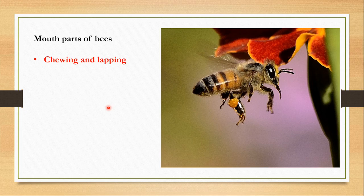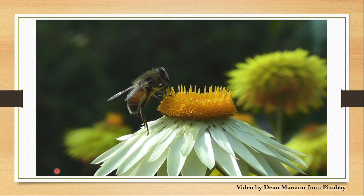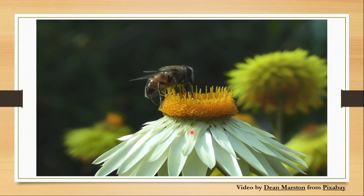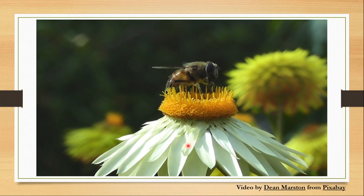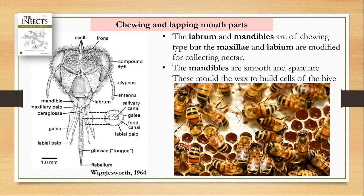Now I am going to talk about the chewing and lapping mouthparts found in bees. You can see the mouthparts getting inserted inside the flower to draw nectar from the bottom. The honeybees lap up the nectar from a flower. But honeybees also make nests for their offspring, with hexagonal cells made of wax, and these cells are made with the help of the mandibles.